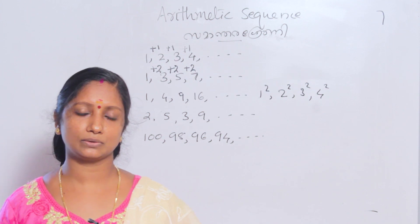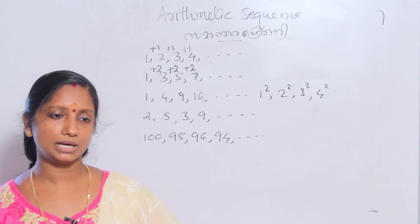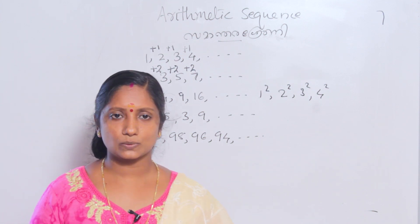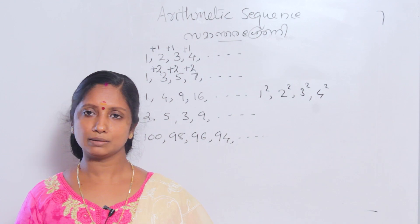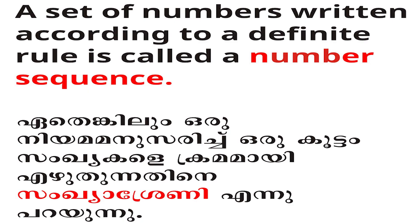Therefore, you can find each set of numbers following a definite rule — this is called the number sequence. A set of numbers written according to a definite rule is called the number sequence.